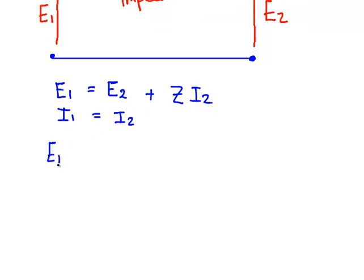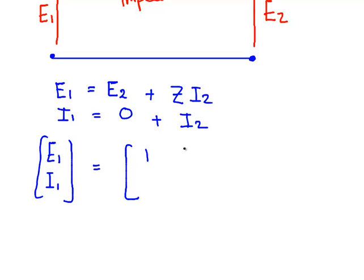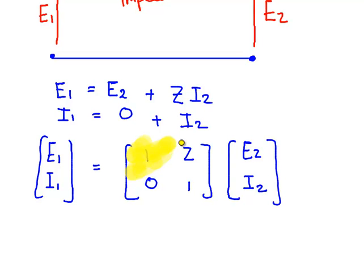Now, essentially what we're going to do here is rewrite this in matrix form. So I have E1 and I1. So this system of equations here can be written as... I'm going to put a plus I2 there, and I can put a zero here. And this system of equations can be written as 1, Z, 0, 1, times E2, I2. Now, this here is what we call the transmission matrix. So that's the transmission matrix for a series impedance.